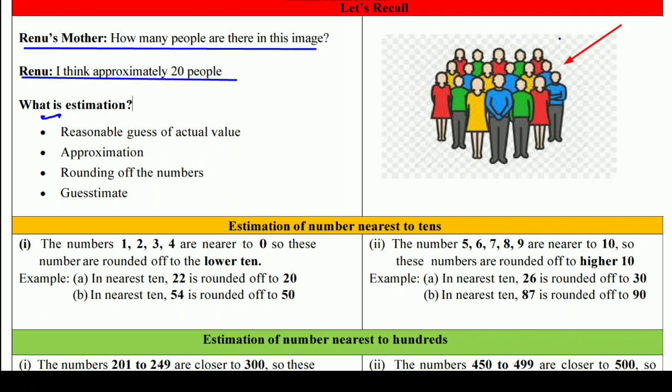Estimation होता क्या है? जब हम कहते हैं कि approximately इतनी चीज़ें होंगी — यानि near about, exact तो नहीं, उसके आसपास — तो हम उसको estimation बोलते हैं। That means a reasonable guess of actual value — यानि कि हम किसी actual value का reasonable guess लगाते हैं।